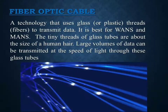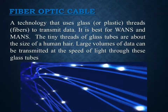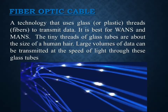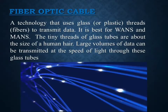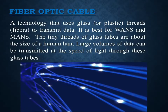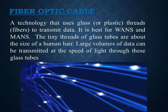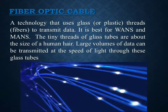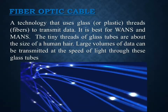Fiber optic cable is the fastest of all three — faster than twisted pair and faster than coaxial cable — because large volumes of data can be transmitted at the speed of light. This cable uses glass tube threads or fiber to transmit data. It is best for use in wide area networks and metropolitan area networks. The tiny threads of glass are about the size of a human hair, and with a single strand the entire Bible can be transmitted in just one second.